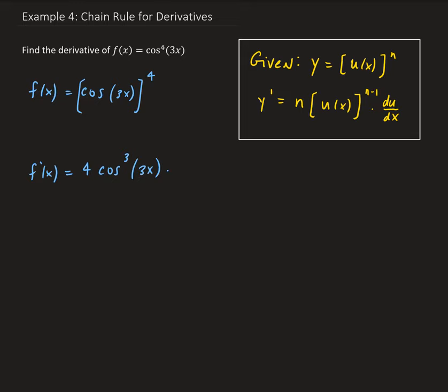And then we're going to take the derivative of the inside part — the derivative with respect to x of cosine(3x). Notice we don't write the power here because that was already taken care of. So this is going to be equal to 4 times cosine cubed of 3x.